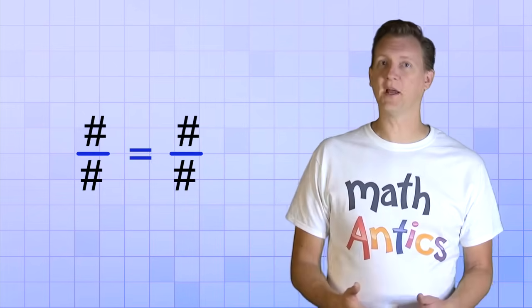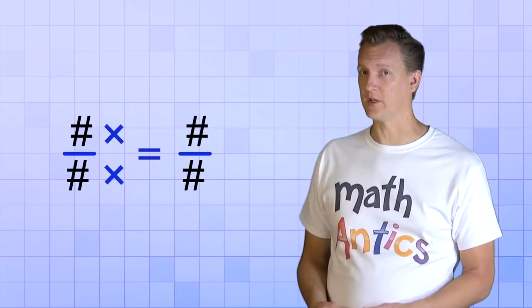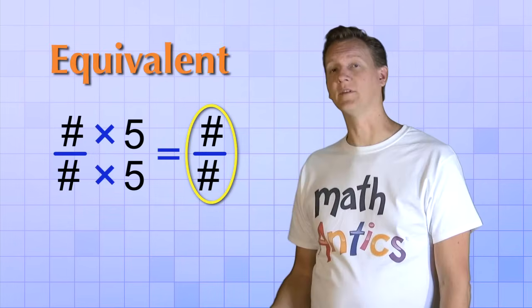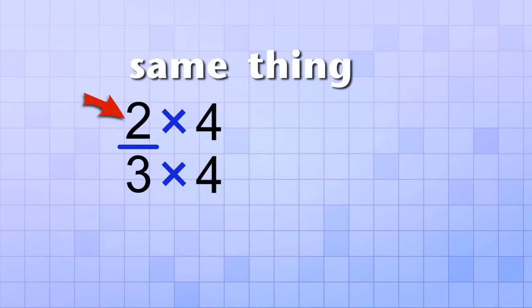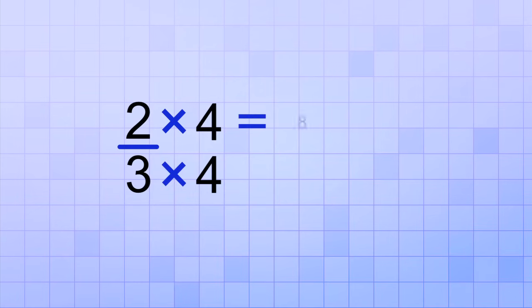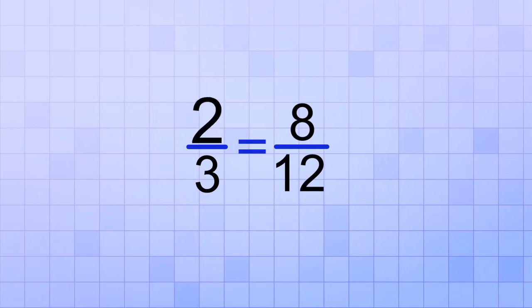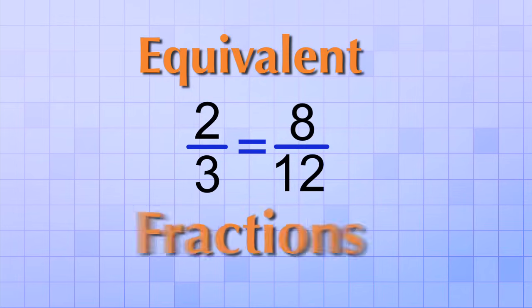To show you how, let's review one of the easiest ways to get a fraction that is equivalent to another fraction. If you multiply the top and bottom numbers of a fraction by the same number, the result will be equivalent to the original fraction. For example, if you have the fraction 2 over 3, you could make an equivalent fraction by multiplying the top by 4 and the bottom by 4. You have to do the same thing to both the top and bottom numbers or the result won't be equivalent. On the top, 2 times 4 equals 8, and on the bottom, 3 times 4 equals 12. So the fractions 2 over 3 and 8 over 12 are equivalent fractions.